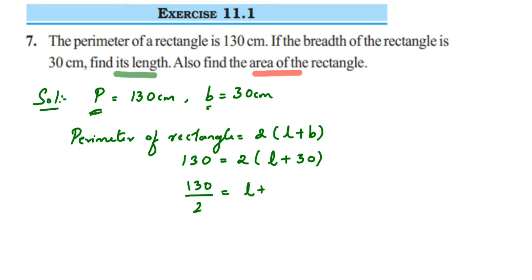130 divided by 2 is 65, so we get 65 = L + 30. Now we're going to transpose 30 to the other side. Since 30 is in addition, the transpose comes in subtraction. So 65 - 30 = 35. Therefore, the length is 35 centimeters.